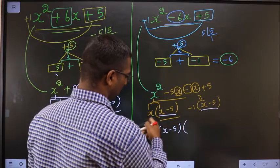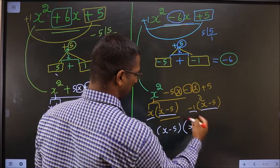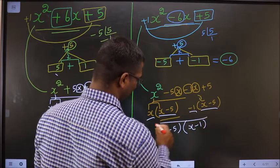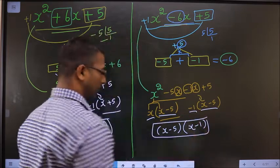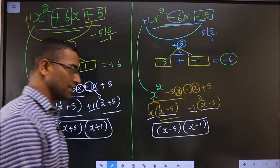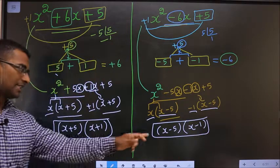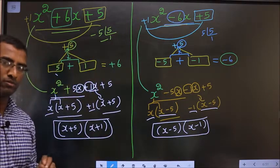Take x minus 5 common from both. Here x is left and here minus 1 is left. Thus we have factorized and the answer is (x minus 5)(x minus 1). That is the change between the two examples.